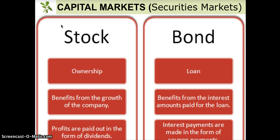There are two broad categories of capital markets. The first is called the stock market or equity market, and the other is called the bond or debt market. There are many different stock markets all over the world. The New York Stock Exchange, for example, is one stock exchange. There are stock exchanges in almost every country around the world, from Israel to Brazil to China and so forth.